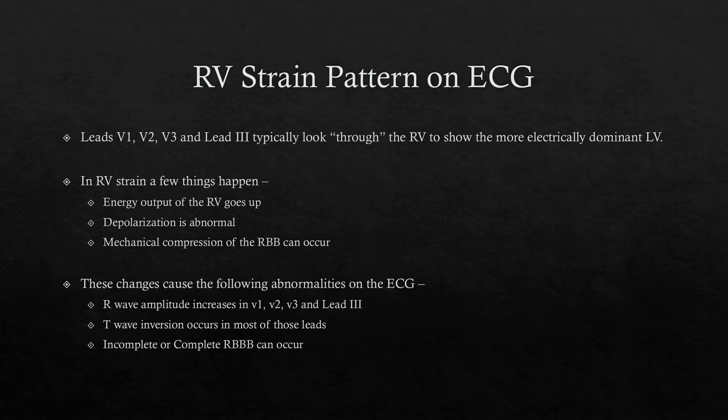As RV energy output goes up, you start getting R waves. R waves are positive. V1 is supposed to be negative — it's an anchor lead that on every normal adult should present a certain way. If V1 is upright in any fashion, if you have any R wave in V1 greater than maybe a millimeter, that is abnormal. Additionally, anytime you have an abnormal depolarization, your T waves can flip. That's why every bundle branch block has discordant T waves — T waves on the opposite side of the QRS complex.